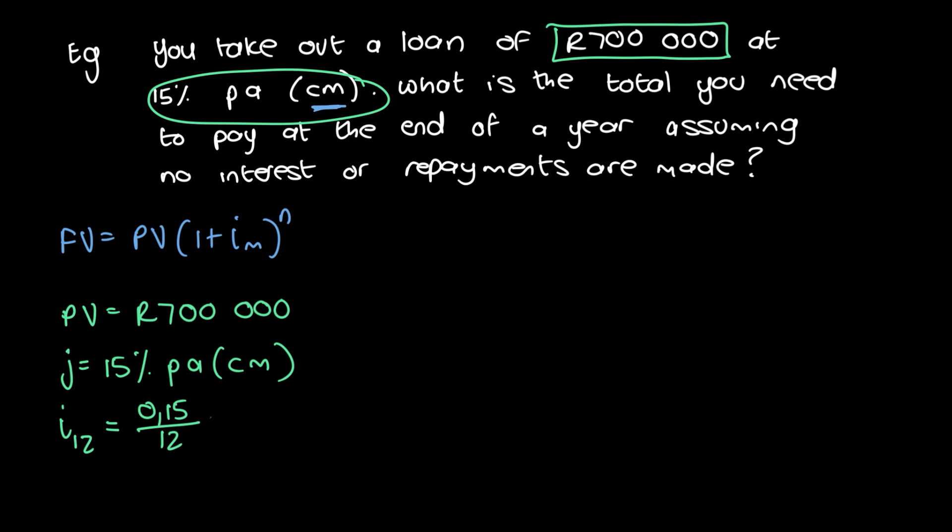Now I'm not going to round it off anything here. I'm just going to leave it as is. So let's remove that equal sign. Because remember, when you put it into your formula, you want it to be as accurate as possible. You don't want to introduce rounding off errors before you even get to the end result. Okay, so what next do we have? It says here, what is the total you need to pay at the end of the year? So we have n is a year. So n equals one year.